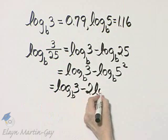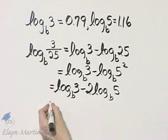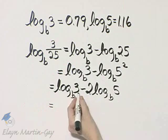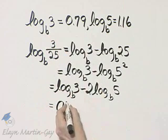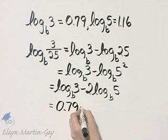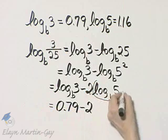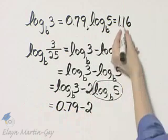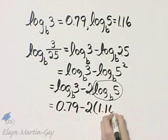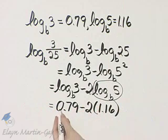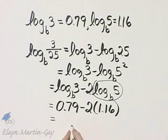Now let's substitute log base B of 3 given to us to be 0.79 minus 2 times, and then what were we given for log base B of 5? We're given 1.16. So find 0.79 minus 2 times 1.16.